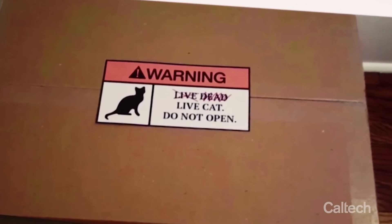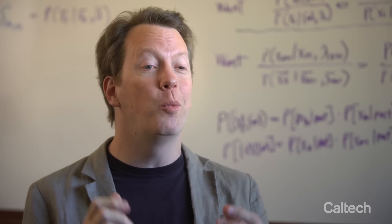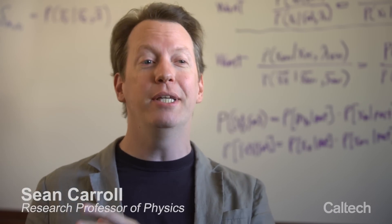Schrodinger's cat is a famous thought experiment that tries to illustrate the weirdness of quantum mechanics. Erwin Schrodinger was one of the founders of quantum mechanics. He's the guy who came up with the equation that tells us how quantum mechanical systems evolve through time.